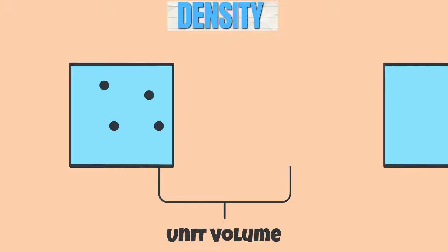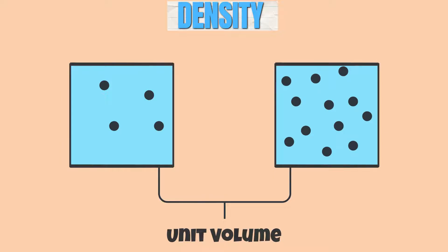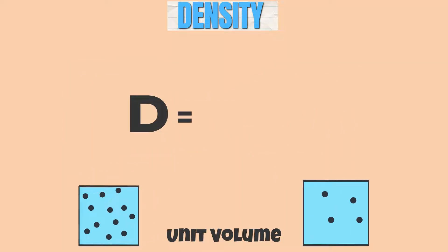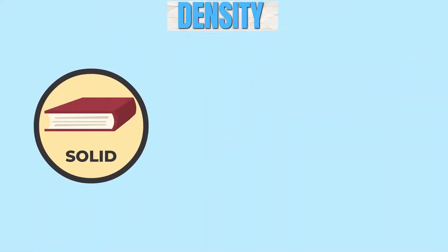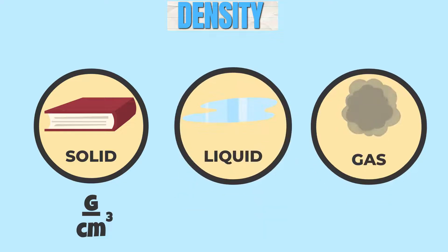Density is a measure of mass per unit volume of an object. The formula for calculating density is d equals m over v. For solids, density is measured in units of grams per cubic centimeter and for liquids and gas, the units for density are expressed in grams over milliliter.